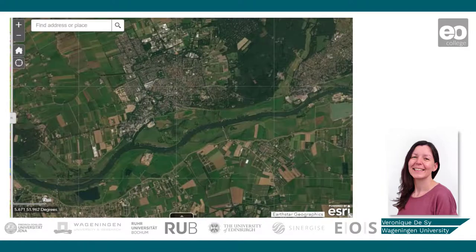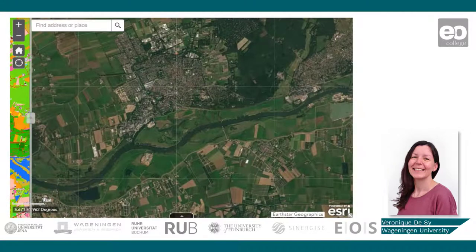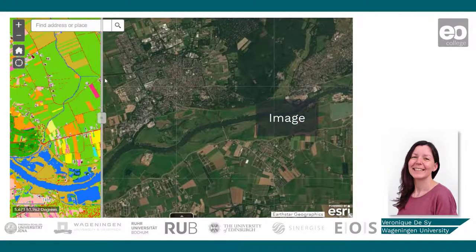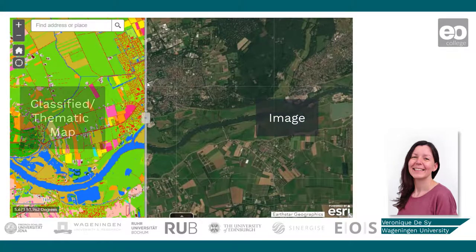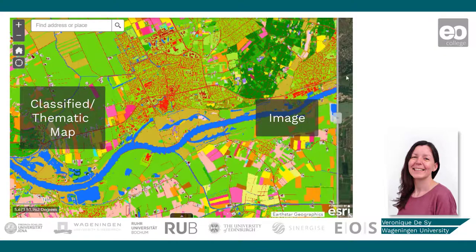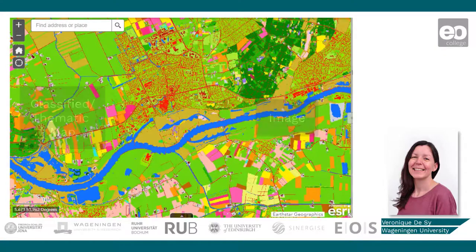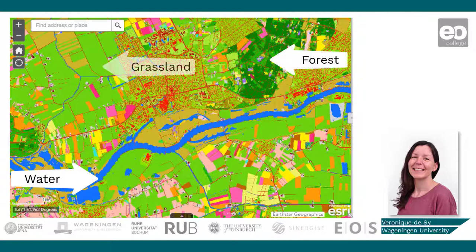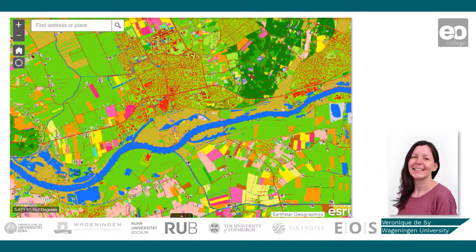The objective of digital image classification is to assign all pixels in the image to a particular class or theme. For example, we can assign land cover classes such as water, forest, or grassland. The resulting classified image is essentially a thematic map of the original image, where each pixel belongs to a particular class.